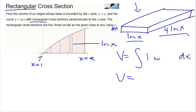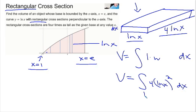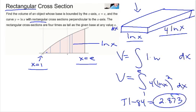So I'm going to have the integral of 4 times the natural log of x, the quantity squared dx. My limits of integration are from 1 to e. So that problem has a little bit different setup, but it's really not that bad. We can do that problem on the graphing calculator. Do the TI-84 and get 2.873.